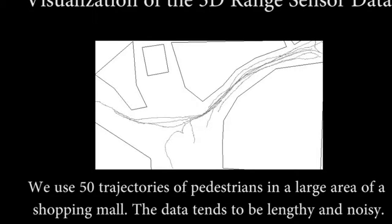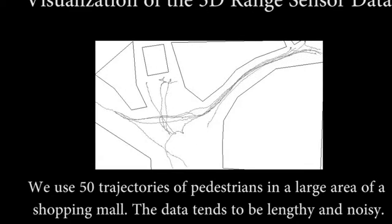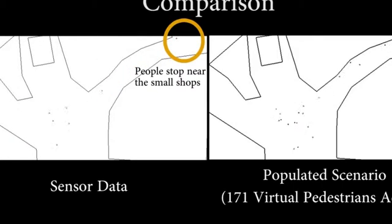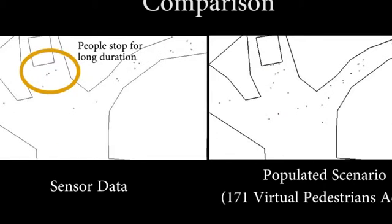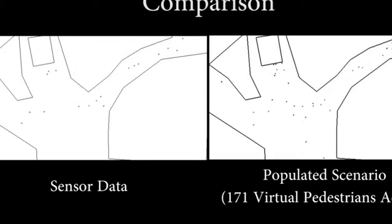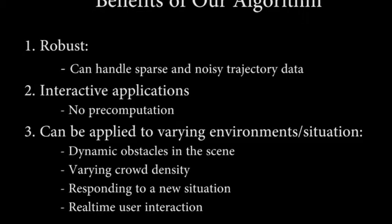Here we show the application of our method on 3D range sensor data. We use 50 trajectories of pedestrians in a large area of a shopping mall. This data is very lengthy and very noisy. We automatically extract the main pedestrian flows from the scene. In our simulation, we added 171 virtual pedestrians which replicate the behaviors from the original sensor data. Our method can handle sparse and noisy trajectory data. It requires no pre-computation and can be used for interactive applications. Our method can also be applied to varying environments, respond to dynamic obstacles, vary crowd density, and respond to new situations for real-time user interactions.